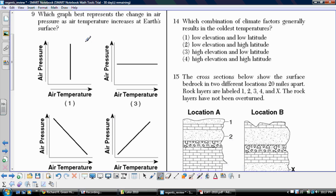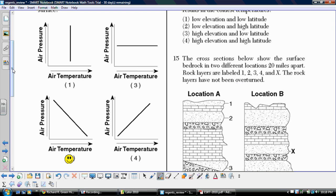Moving on to number nine. We're asked which graph best represents the change in air pressure as temperature increases at Earth's surface. Remember that low pressure is caused by air that's rising up off of an area. Relative to areas where there's colder, more dense air where the air will be sinking, the sinking is actually going to provide the pressure. We know that hot air, due to its lower density, rises. So as we look at the graphs, we're looking for the air pressure to decrease as the air temperature increases. So it would have to be shown with graph two.